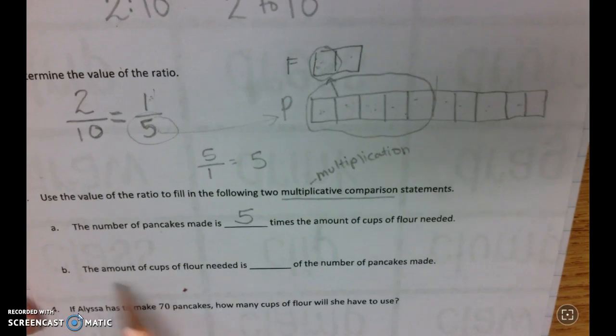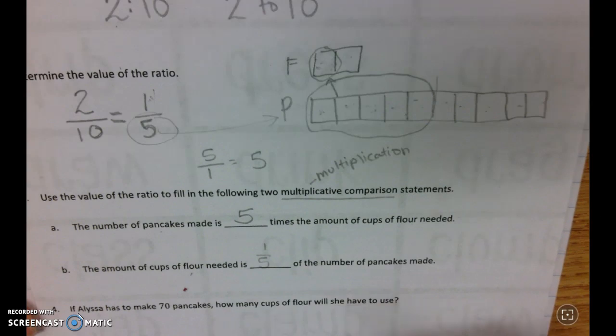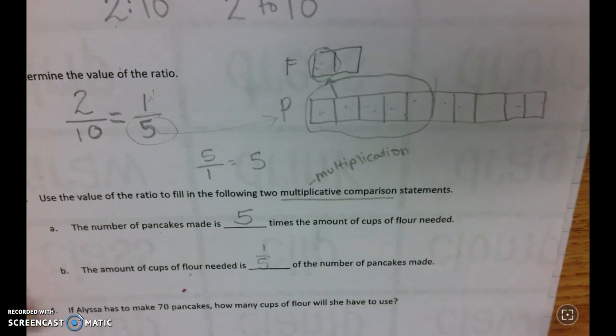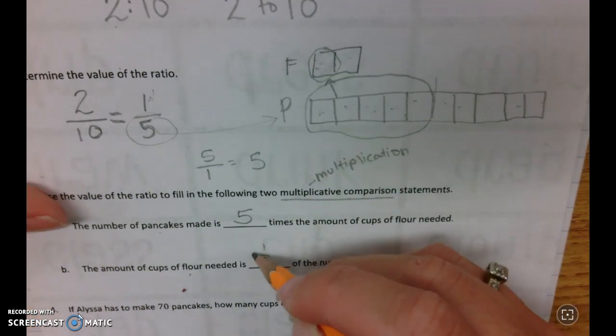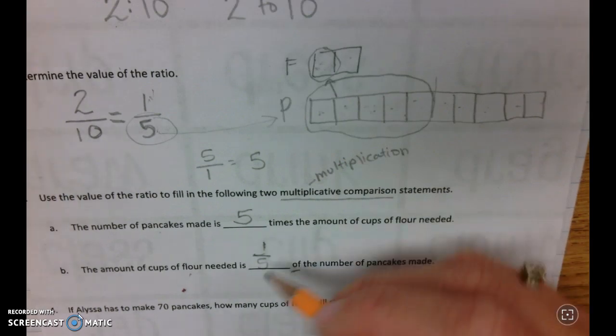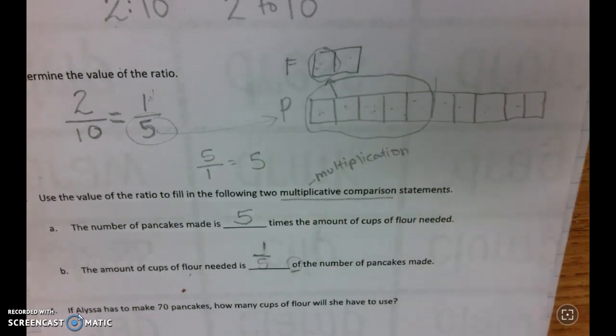Likewise, the amount of cups of flour needed is one-fifth of the number of pancakes made. Whenever we see this 'of,' that tells us that we're multiplying. So if we want twenty pancakes, we only need one-fifth of that to make, or one-fifth of that for flour.